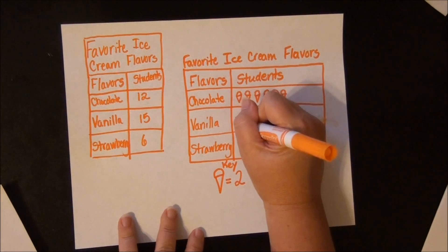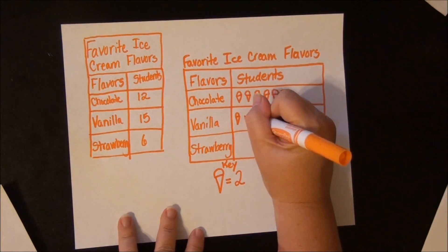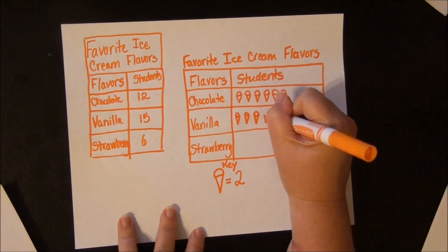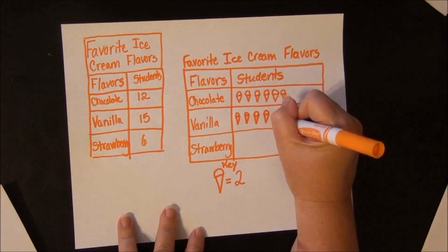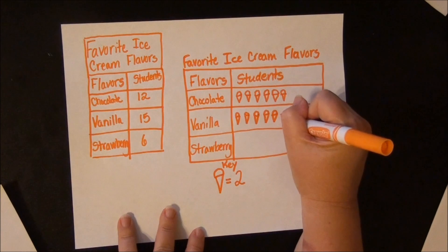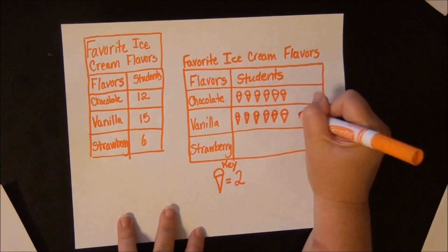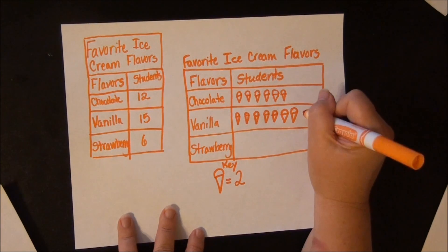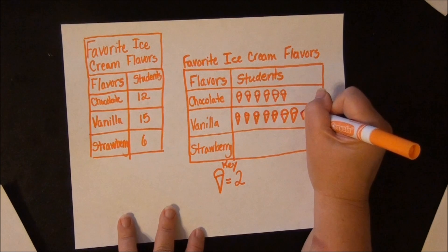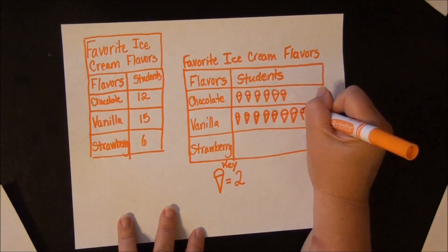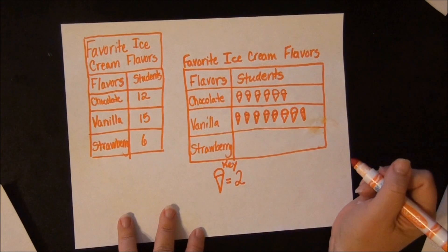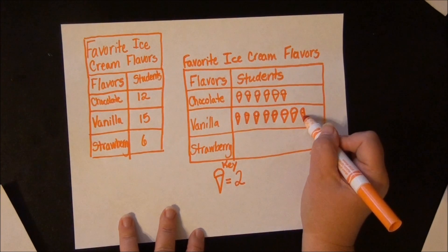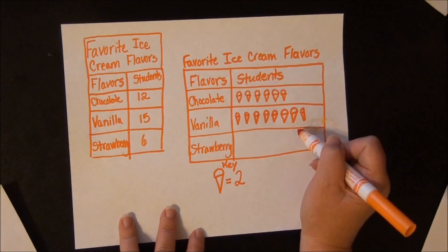So we have 2, 4, 6, 8, 10, 12, 14. Now we want half of another one, so I'm just going to draw half of a cone right there. It looks a little weird, but that's half of a cone. So it's 2, 4, 6, 8, 10, 12, 14, and one more is 15. So there are 15 vanillas.